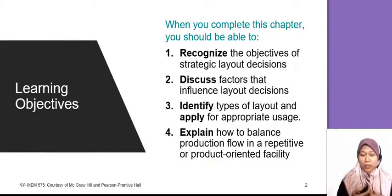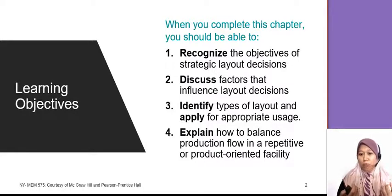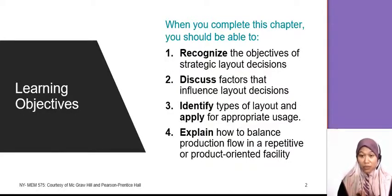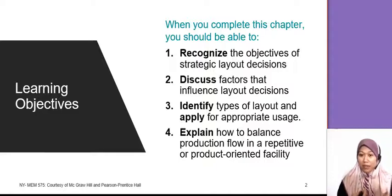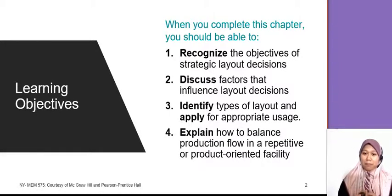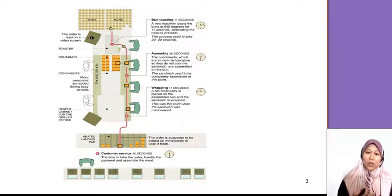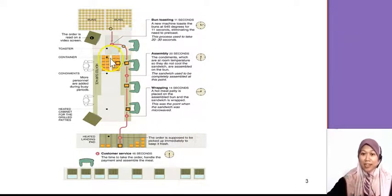In this chapter we're going to look at the objective — why we need to do a layout in manufacturing or services — and we want to see what are the factors that influence the layout decision. Then we look at the types of layout and also do some calculation on line balancing.